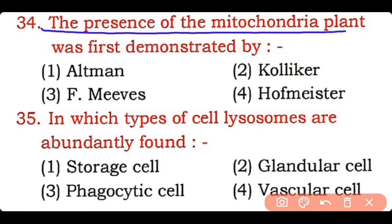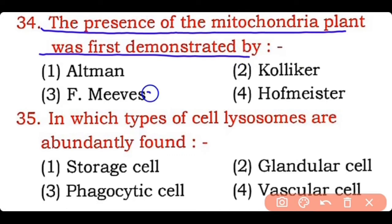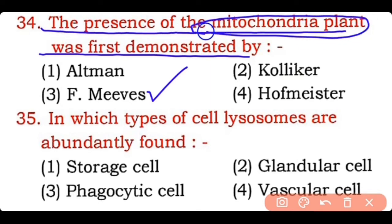Question 34: The presence of mitochondria in plants was first demonstrated by — Altmann, Kolliker, F. Meves, or Benda? Correct answer is option three — F. Meves demonstrated the presence of mitochondria in plants in 1904 (noted as 1940 in transcript).